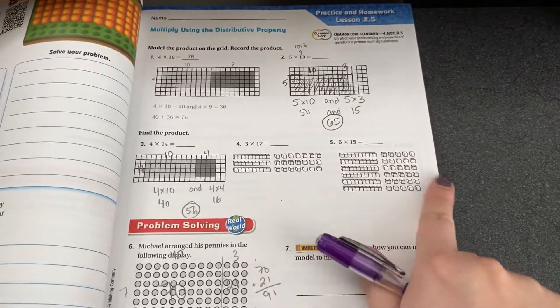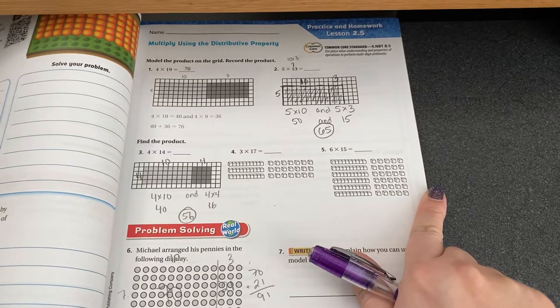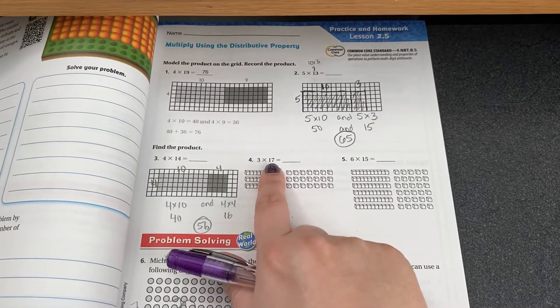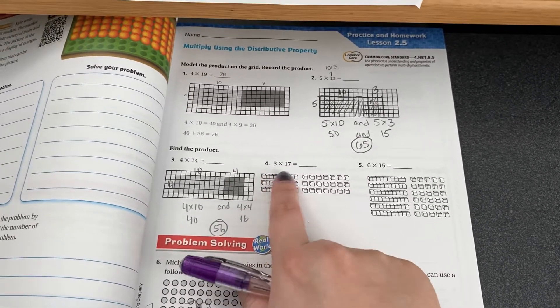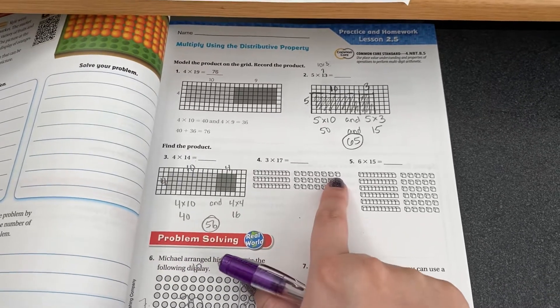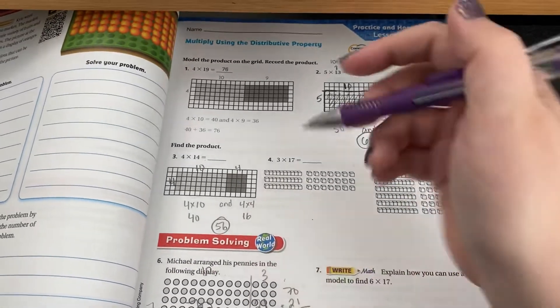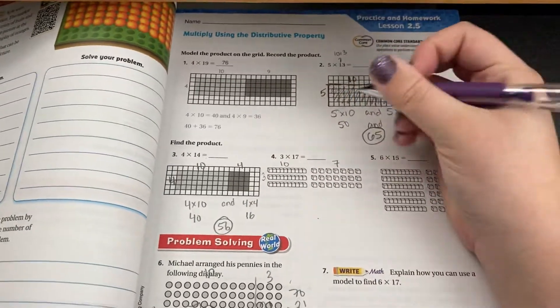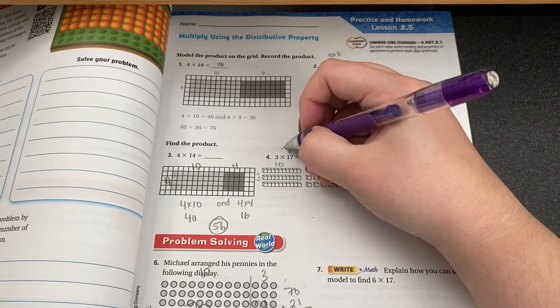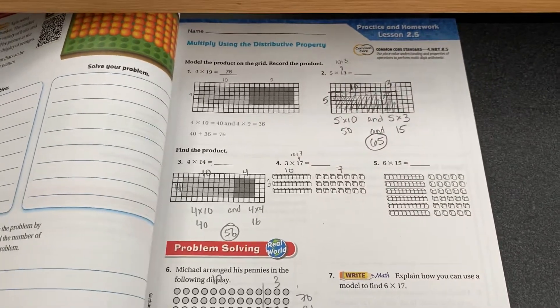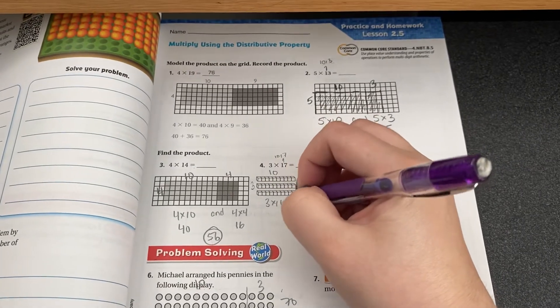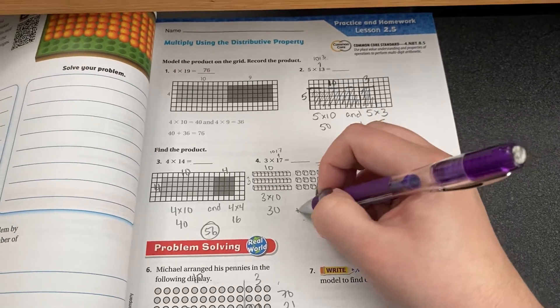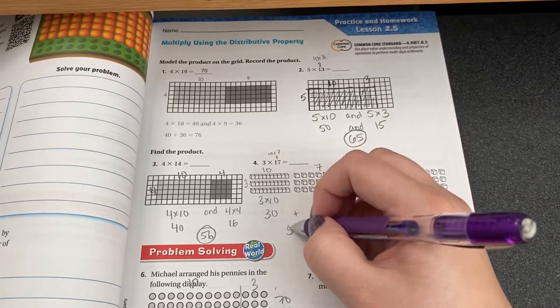They also did it with base ten blocks over here. It's just a different kind of picture, but it means the exact same thing. So with this one, they had three times seventeen, three groups of seventeen. But they split the seventeen into groups of ten and groups of seven by using the base ten blocks. Three times ten over here is thirty. Three times seven is twenty-one. Put them all back together and I get fifty-one.